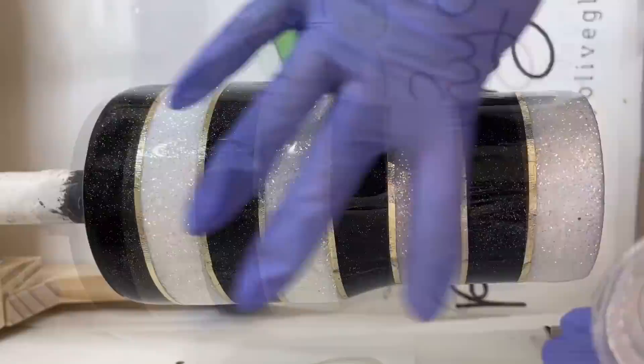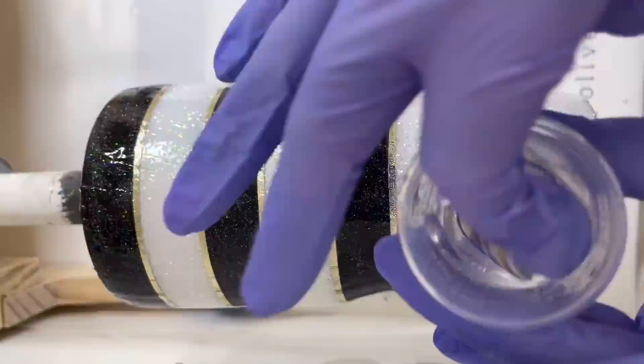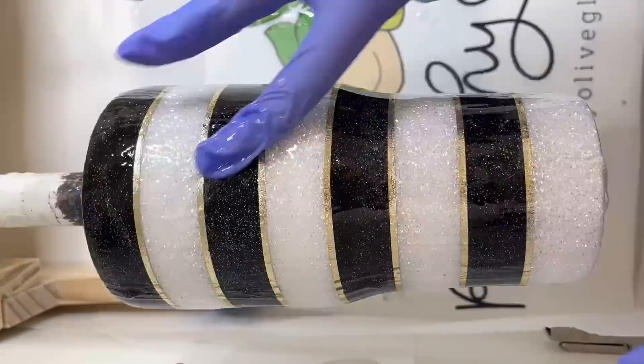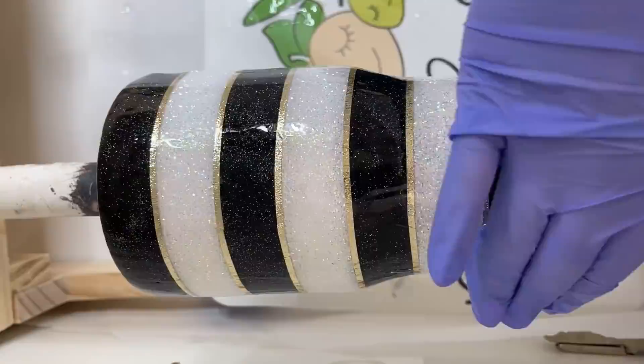For this next layer, I'm just using 20 milliliters of that fast setting epoxy. The reason why I'm going to put epoxy over these vinyl lines before I put on more decals is so that I don't have any creases in the sunflower decals and the name decal.